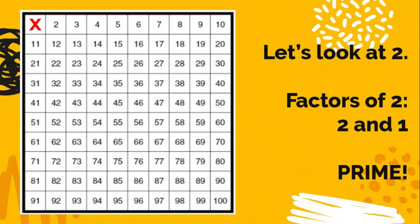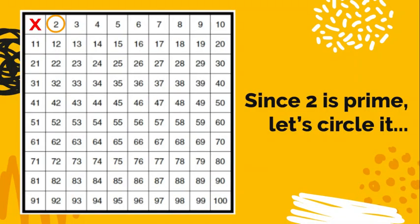Let's look at the next number, number 2. Thinking about the factors of 2. 2 times 1 is the only fact that equals 2, so 2 and 1 are the factors. That means, since it only has two factors, that 2 is prime, and the only even prime number, by the way. So you're going to pick a new color. I chose orange, and you're going to circle the number 2.